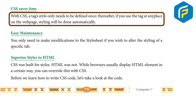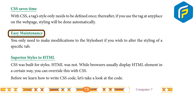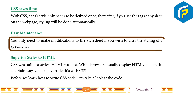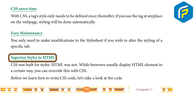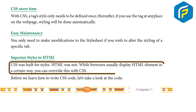CSS saves time: with CSS, a tag style only needs to be defined once. Thereafter, if you use the tag at any place on the web page, styling will be done automatically. Easy maintenance: you only need to make modifications to the style sheet if you wish to alter the styling of a specific tag. Superior style to HTML: CSS was built for styles; HTML was not.